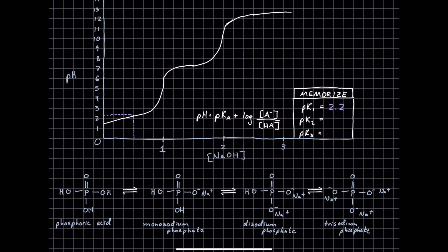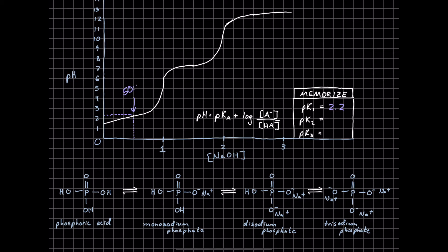So below this half-equivalence point we have our phosphoric acid. Above our half-equivalence point, we have predominantly monosodium phosphate. And then when we add one full equivalent — often one molarity of sodium hydroxide — right around this pH of 5, we see our equivalence point where almost everything is going to be monosodium phosphate. So we're going to have 50-50 between phosphoric acid and monosodium phosphate at the half-equivalence point, whereas at this first equivalence point we're going to have pretty much all monosodium phosphate and pretty much no phosphoric acid. However, this is a polyprotic acid, so we have two more hydrogens that we can take care of.